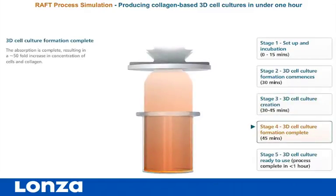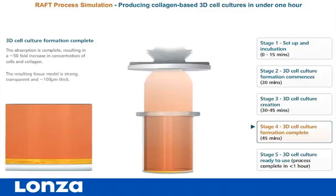Stage 4: 3D cell culture formation complete. The absorption is complete, resulting in an approximately 50-fold increase in concentration of cells and collagen. The resulting tissue model is strong, transparent, and approximately 100 micrometers thick.